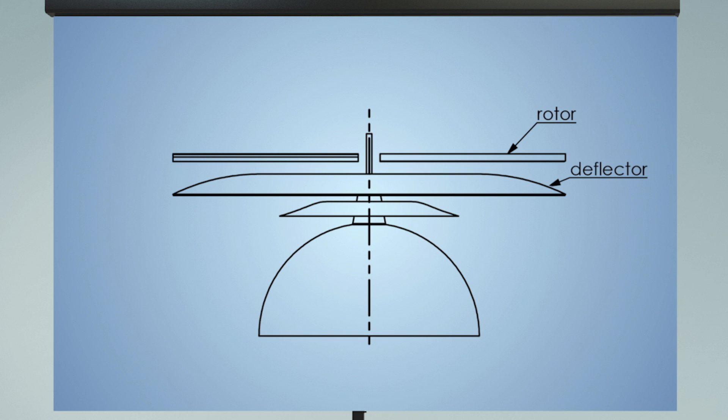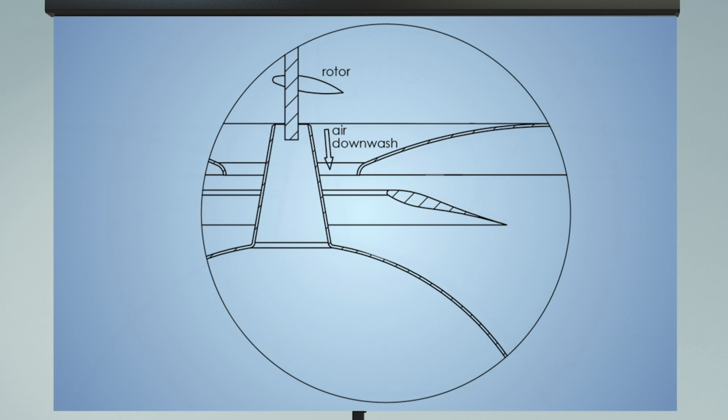A deflector below the rotor channels a part of the rotor downwash towards the rotor shaft. By this arrangement, the downwash can be channeled to form a high-speed jet that flows over the airfoil and the Coandă profile.